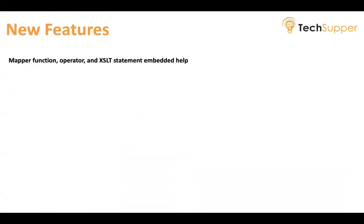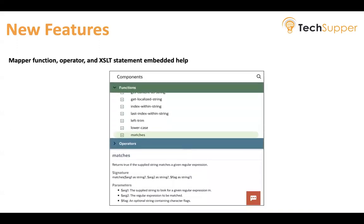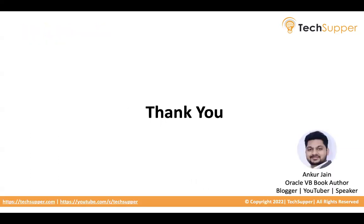Mapper functions, operators, and accessibility now include embedded help. If you don't know how to use a function — for example, the Match function — you can click on it and the embedded help will appear right there. Earlier it used to redirect you to a different page, but now you can see the help inside the mapper itself. That's all about this. Thank you, bye bye.